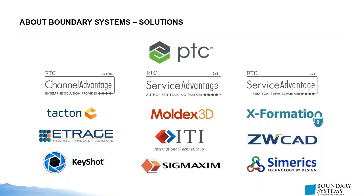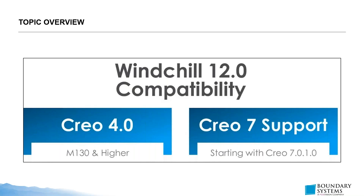Regarding the compatibility of Windchill 12 with Creo: you can be on Creo 4 as long as it is M30 or higher in terms of date code. For Creo 7, it supports Creo 7 starting from 7.0.1.0. The initial release of Creo 7 had a couple of issues affecting integration with Windchill that PTC had to sort out, but those are resolved in this version. From Windchill 12.4 onward you should be able to use it.